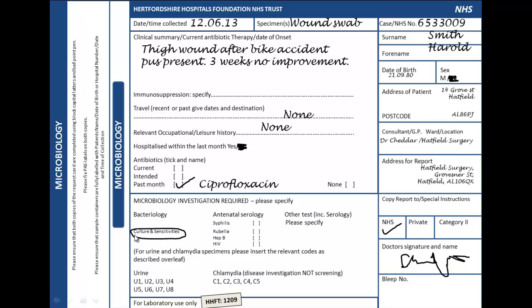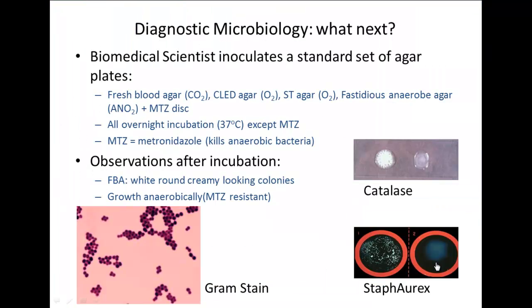Culture means you want to grow the offending organism, the offending pathogen. Sensitivities means you would like to see which antibiotics are effective against this organism. The swab lands in the diagnostic laboratory and a biomedical scientist processes that sample by inoculating and spreading this swab onto a selection of agar plates, where we can grow microorganisms.